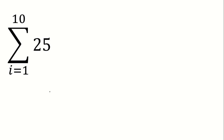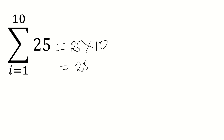So in our first given, we have the summation of 25 where i is equal to 1 up to 10. Since the given here is a constant, we simply multiply 25 to the nth term — this is the upper limit of our sigma notation. So 25 times 10, the answer is 250.